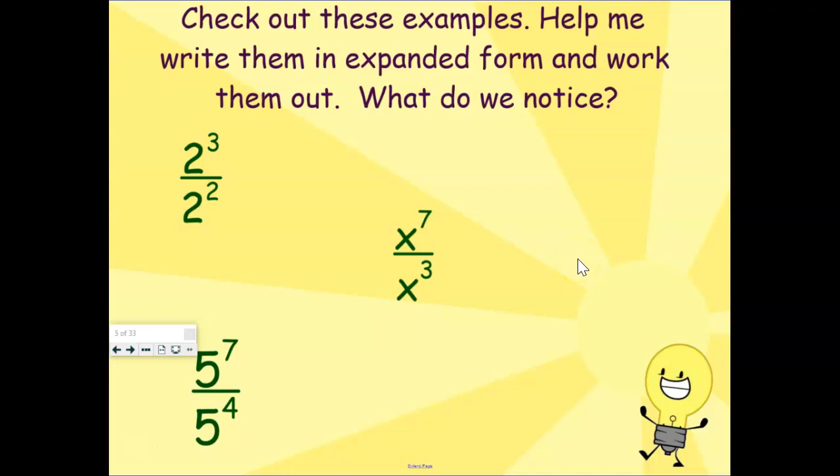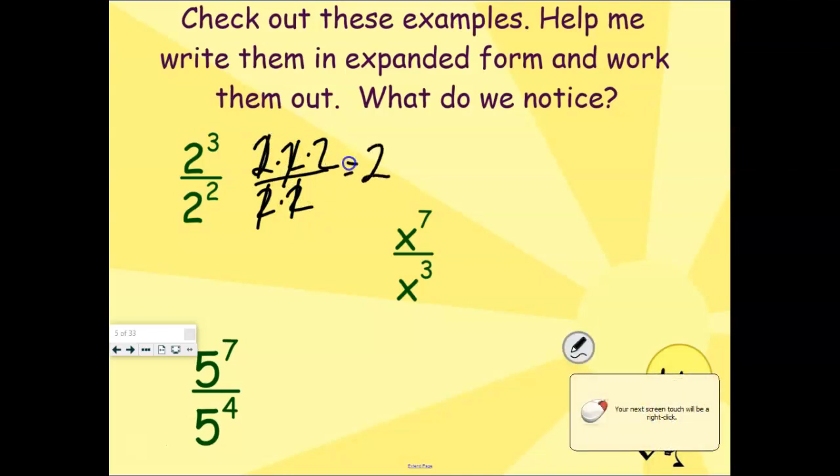Let's start with these examples here. If I write them out the long way, what do we notice? So 2 to the 3rd over 2 to the 2nd is really 2 times 2 times 2 on top and 2 times 2 on the bottom. What happens when we have two of the same things stacked on top of each other? Well, 2 divided by 2 is 1, and 1 times anything is the same thing. So it cancels itself out. Same here. We're left over with a 2, which is really 2 to the 1st power.